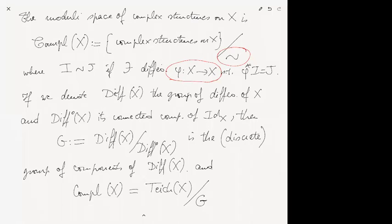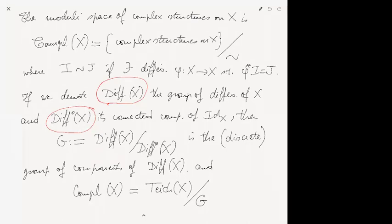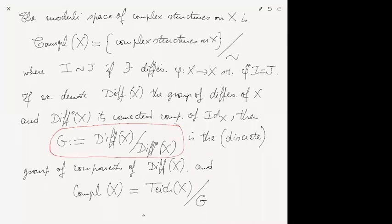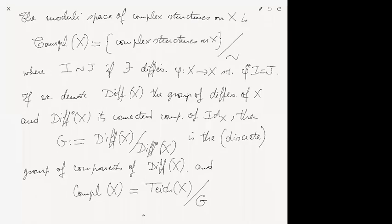The moduli space of complex structures is very similar — the only difference is that we removed the condition that the diffeomorphism be isotopic to the identity. So the equivalence relation is simply that there exists a diffeomorphism pulling one complex structure back to the other. These two spaces are related: if we call Diff(X) the group of diffeomorphisms of X and Diff₀(X) its connected component of the identity, then the mapping class group G is the quotient Diff(X)/Diff₀(X), and the moduli space Comp(X) is Teich(X) modulo the action of G.